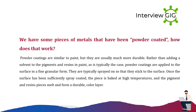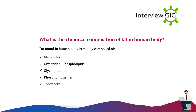How does powder coating work? Powder coatings are similar to paint but usually much more durable. Rather than adding a solvent to pigments and resins as in paint, powder coatings are applied to the surface in a fine granular form. They are typically sprayed on so that they stick to the surface. Once the surface has been sufficiently spray coated, the piece is baked at high temperatures and the pigment and resin pieces melt and form a durable color layer.